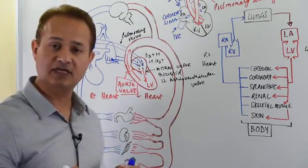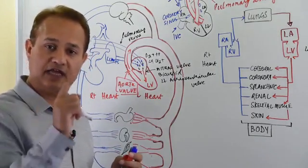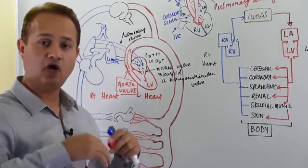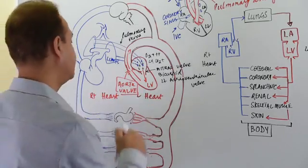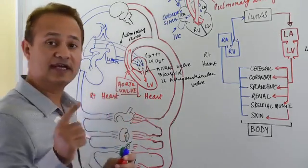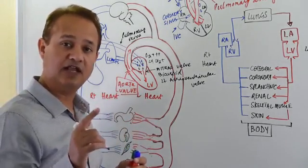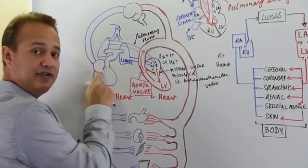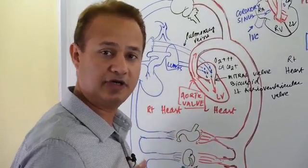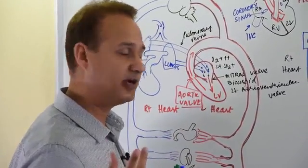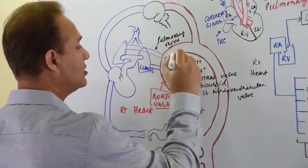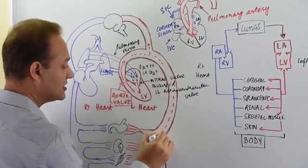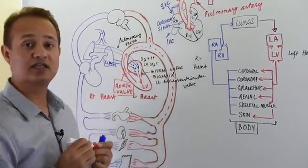Only the left AV valve is bicuspid — meaning it has two leaflets. All other valves in the heart are tricuspid. The right AV valve is traditionally called the tricuspid valve, although the aortic valve and pulmonary valve are also tricuspid. The blood exiting into the aorta then goes to the systemic tissues.